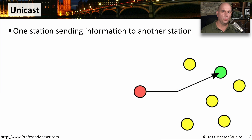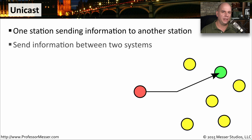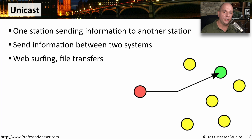A unicast is a one-to-one communication. We have one device that is sending information to one other device, and these two systems are really the only ones involved in the conversation. You commonly see this if you hit a web server, if you're watching this video, or if you're doing a file transfer — you're communicating between one device and another with no other devices even realizing that you two are conversing.